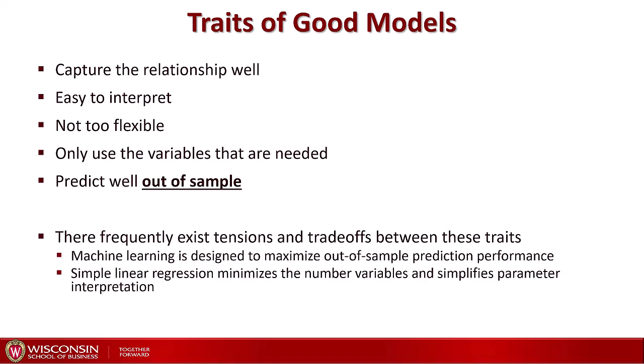There are tensions and trade-offs between these traits. In machine learning, we usually rely on very flexible models designed to maximize out-of-sample prediction performance. However, these models are usually very difficult to interpret, which can create issues when they make wrong predictions — we don't really know why a model made a specific prediction or what to change to fix it. On the other extreme, a very simple linear regression with only one variable makes interpretation very straightforward but might not have good predictive performance. You might get stuck with only a small percentage of variation in y explained by your single x — basically a low R-squared.